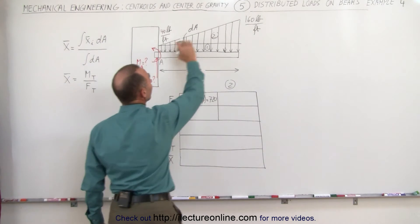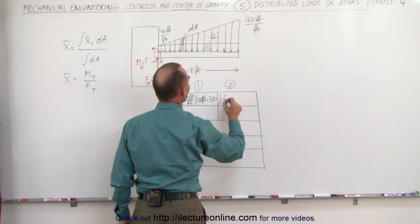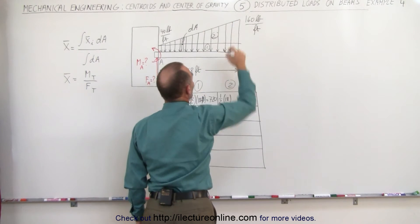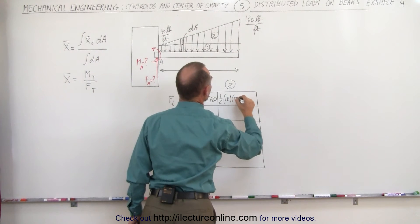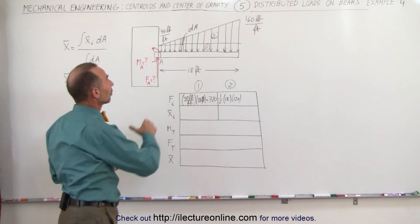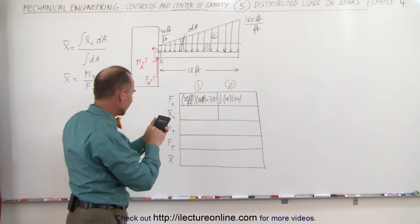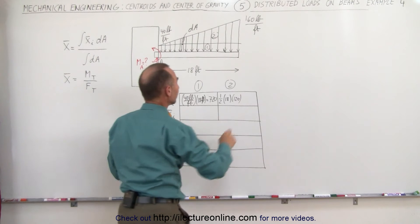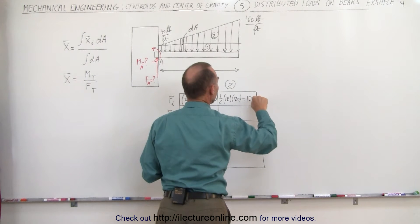Then we do the same for the triangular portion. That's a triangle, so we get one half times the base, 18, times the height, which is 160 minus 40 or 120. That gives us the total force contribution of the triangular part. That's 9 times 120, which equals 1080 pounds.